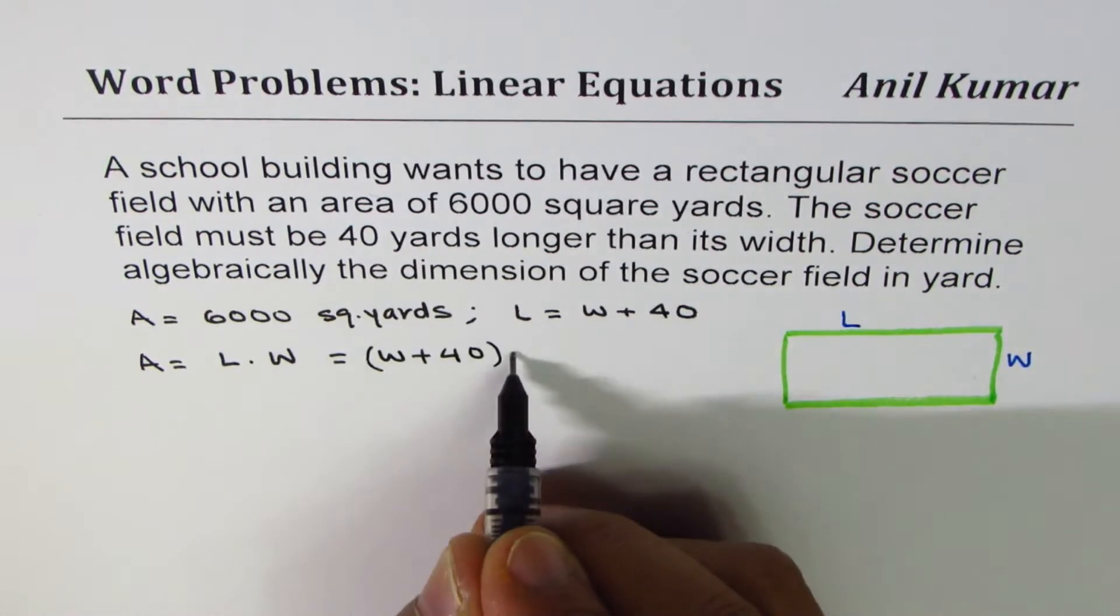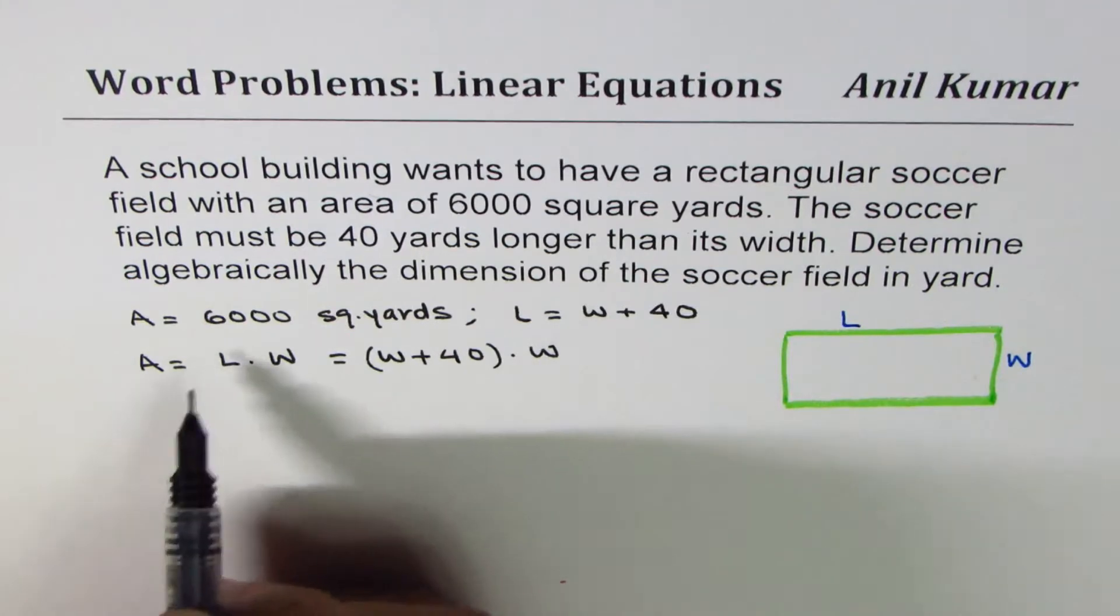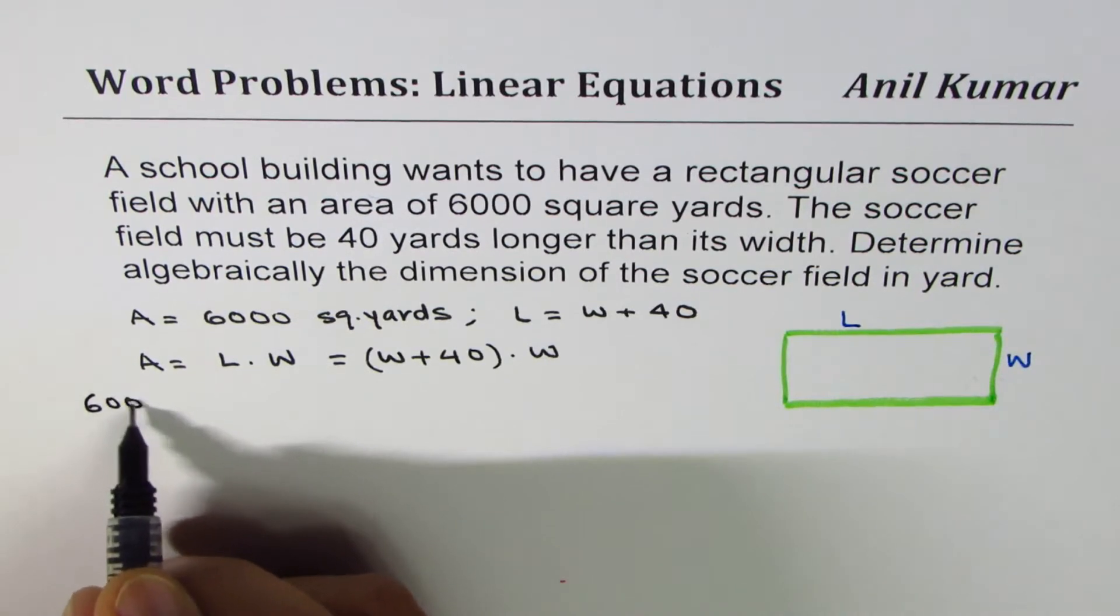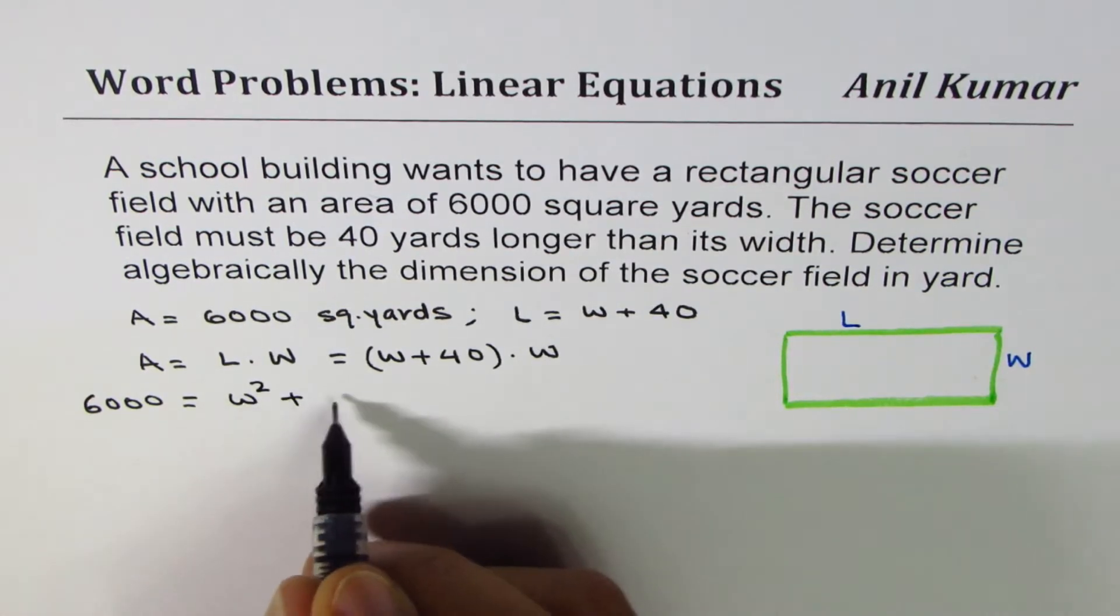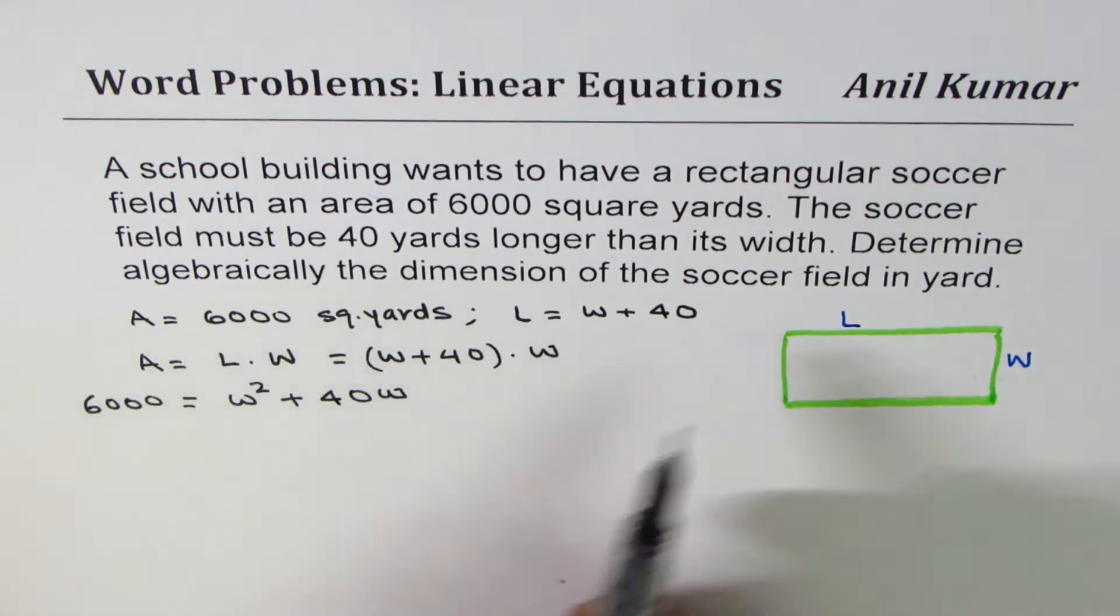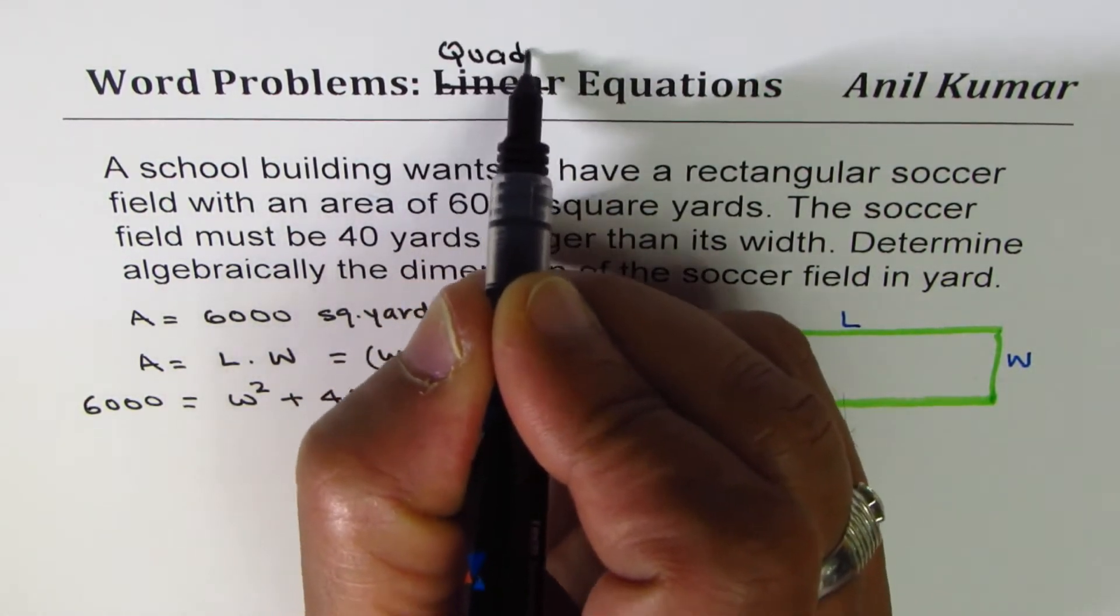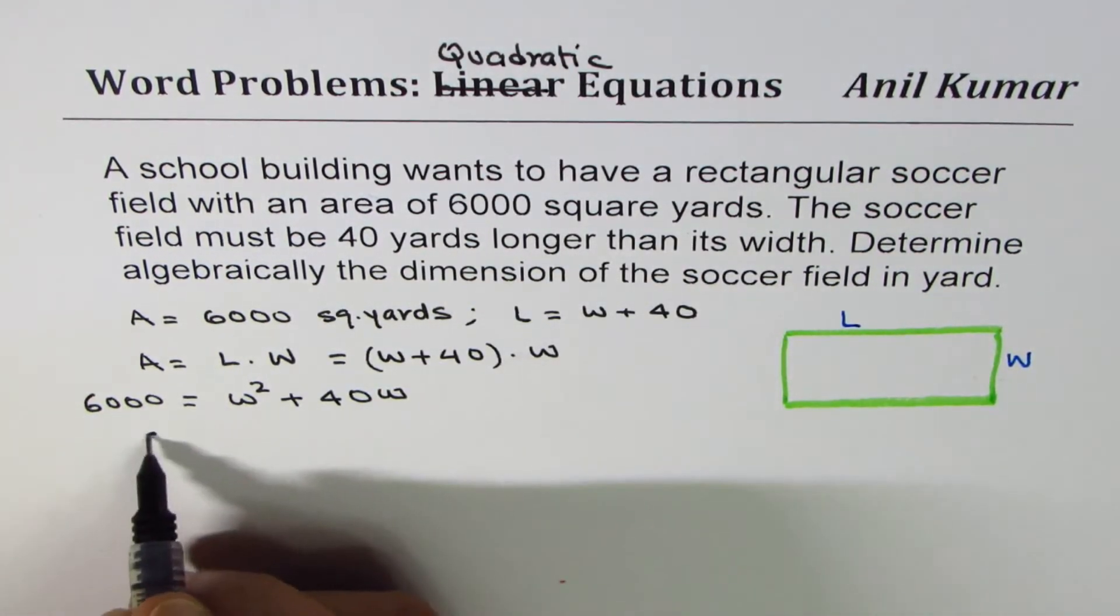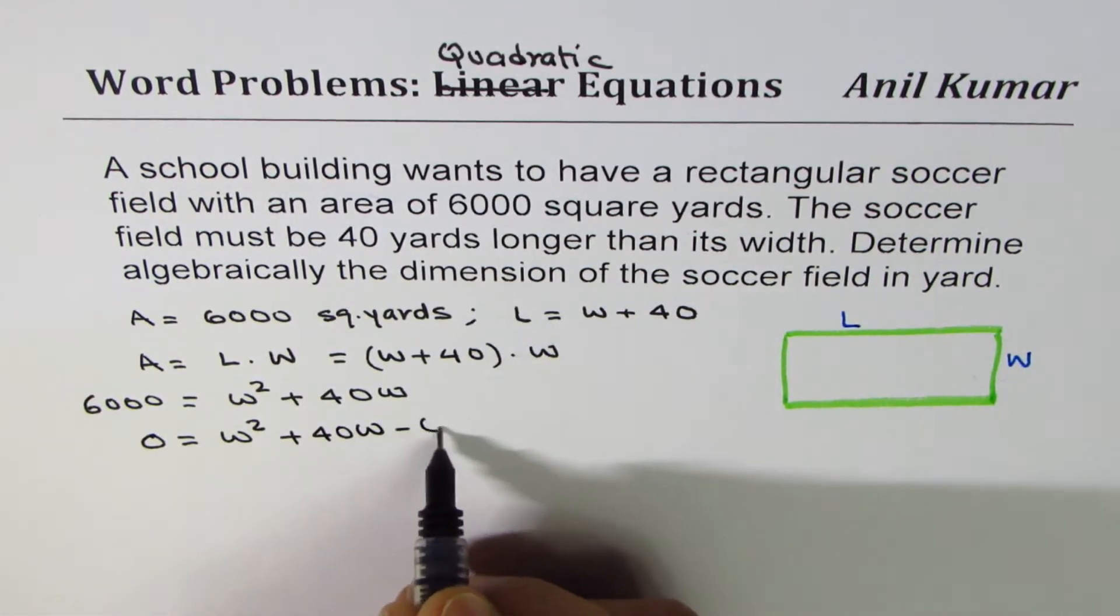If I multiply, I can expand and get a quadratic equation. So we have area which is 6,000, which equals W squared plus 40W. So we have a quadratic equation - area means product, which gives not a linear equation but a quadratic equation. We can bring 6,000 to the right side, so we get 0 equals to W squared plus 40W minus 6,000.